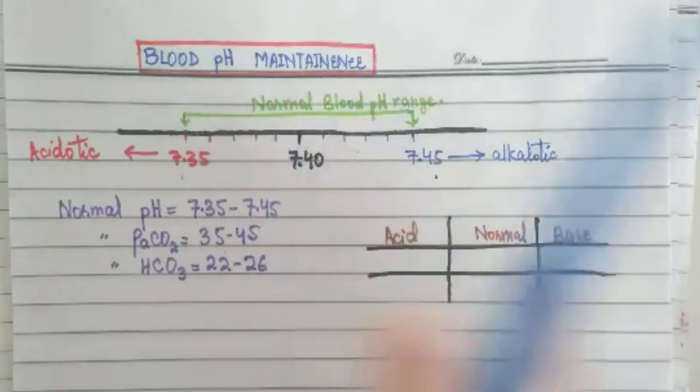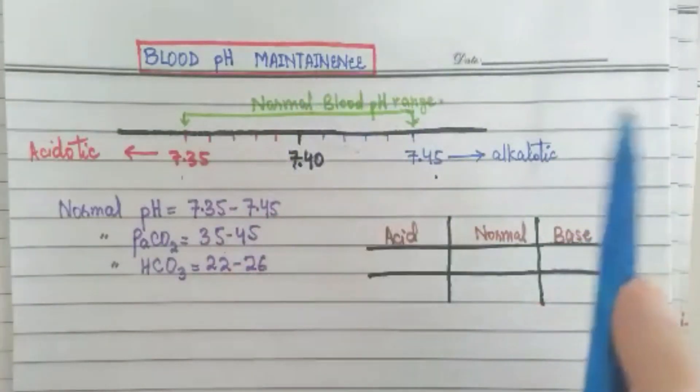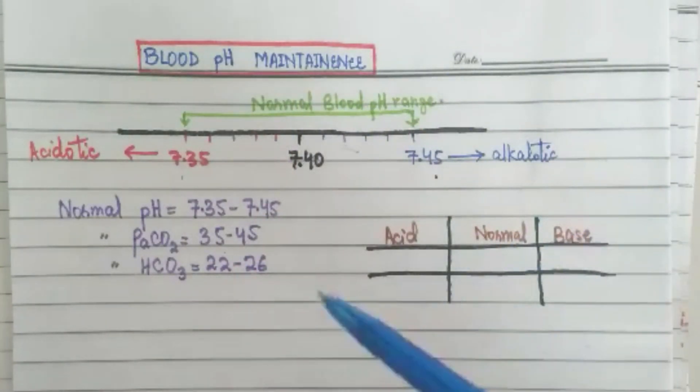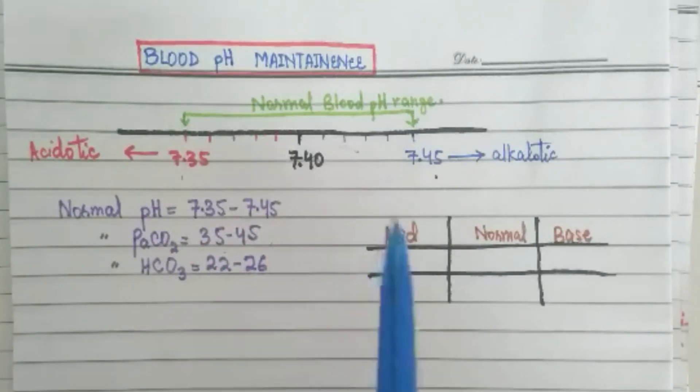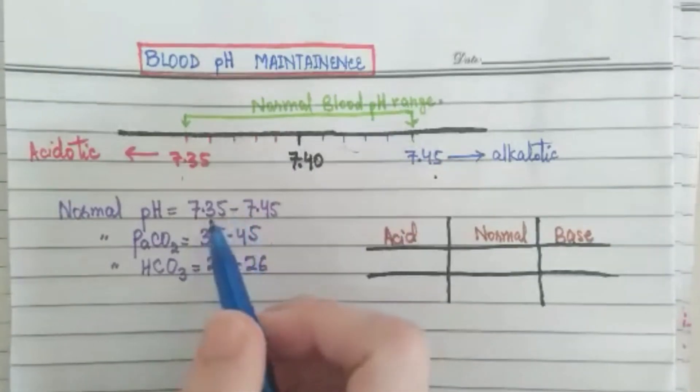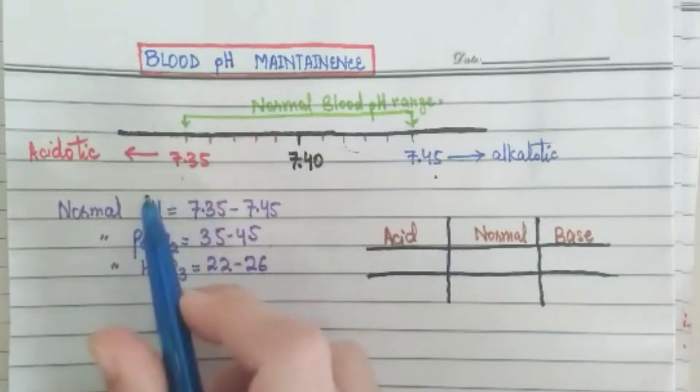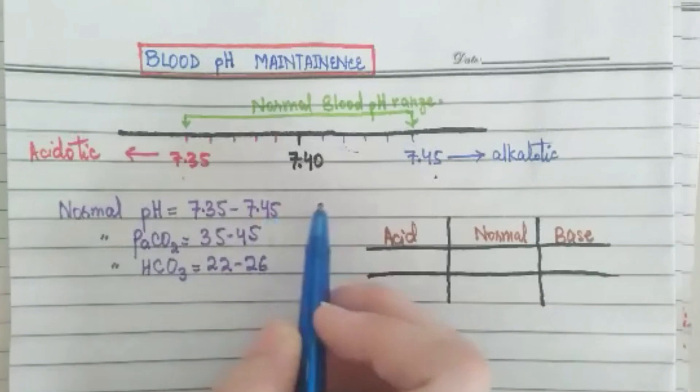We have to keep this in mind. We will evaluate on this basis. We have seen pH. How much is the partial pressure of carbon dioxide? This is 35 to 45, this is the normal range. What happens in pH? If it is less than normal, it's the acid side. And if it is more, it's the base.